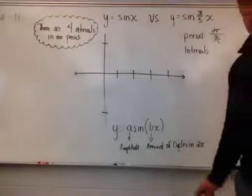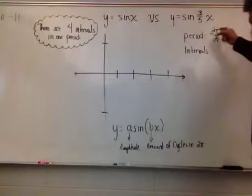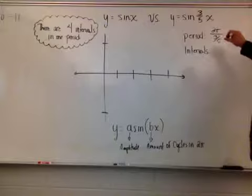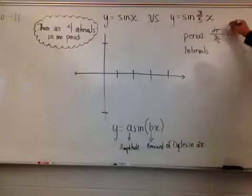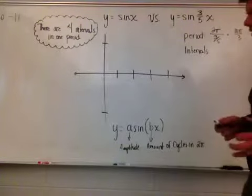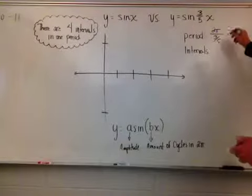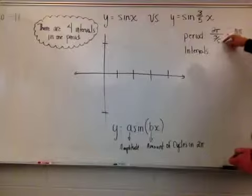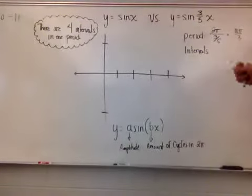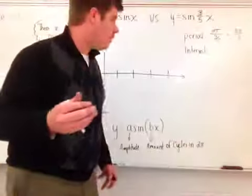To figure out the full cycle length, I take the original period, which is two pi, and divide it by three-fifths. When I multiply through — remember you multiply by the reciprocal — five goes up and it becomes two pi times five over three, which gives ten pi over three. So the new period is ten pi over three.